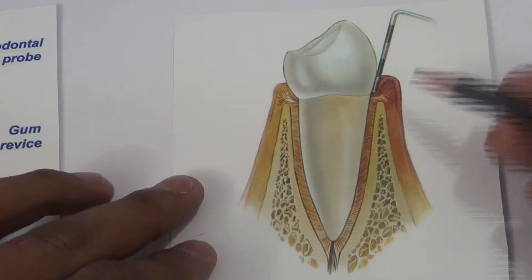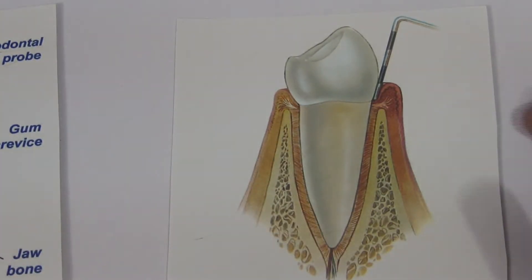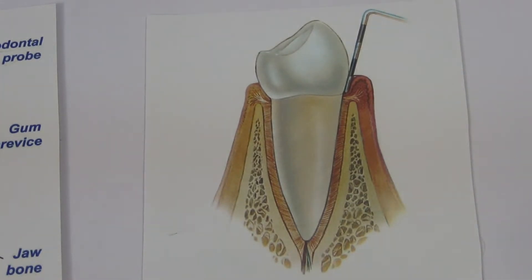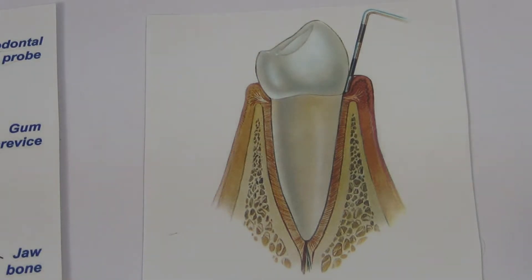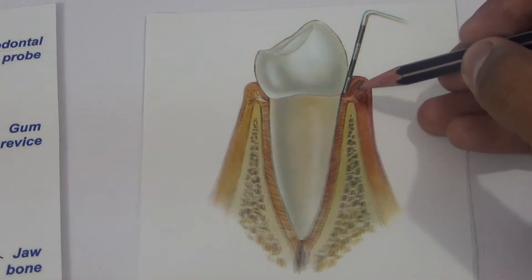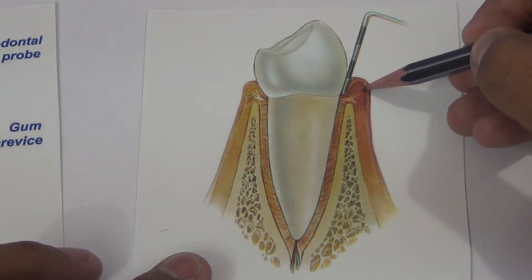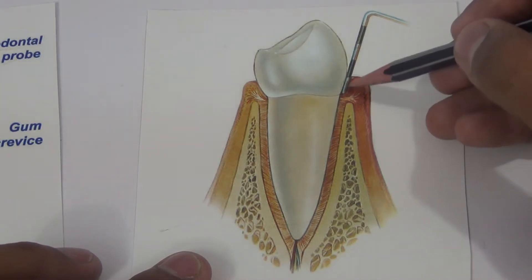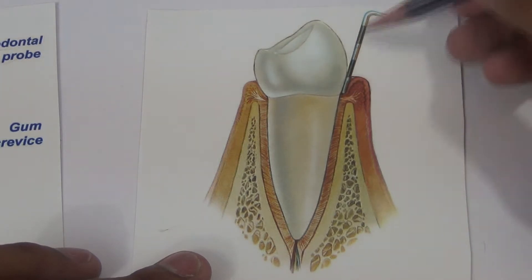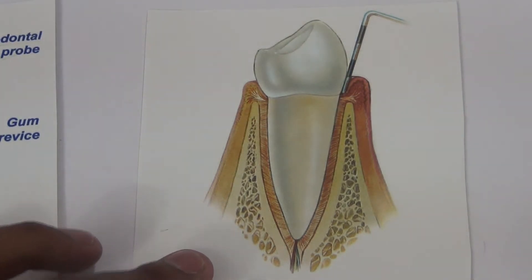Gingivitis is the condition where the gum crevice level changes because of plaque accumulation near the gum tissue, usually at the junction of the tooth and the gums. As the plaque accumulates you may notice inflammation of the gums, which is called gingivitis. This is very reversible — regular brushing in a proper way along with flossing and oral prophylaxis would be enough to reverse this condition. The inflamed gums appear red and this would also lead to bleeding when brushing and when the dentist uses the probe to test for gingivitis.